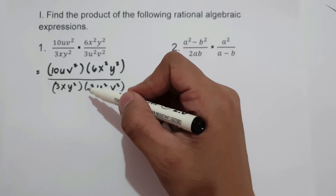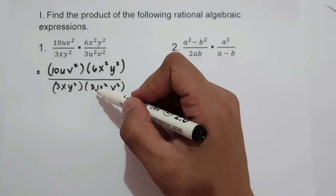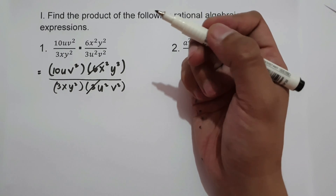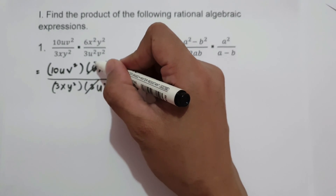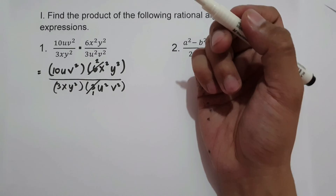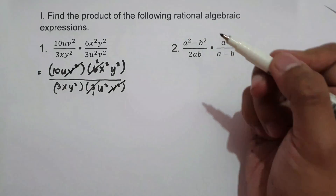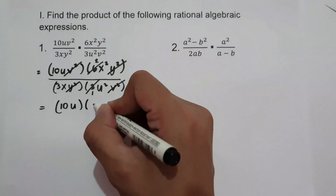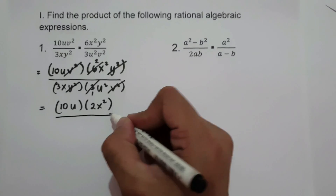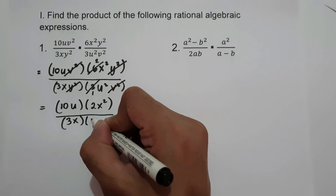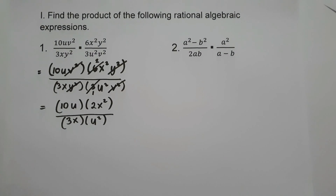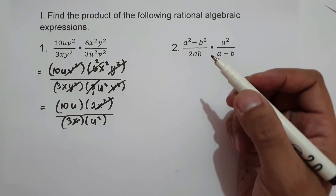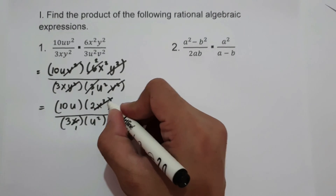Before we multiply, we are going to find coefficients or variables that can be written in simplest form. 6 and 3 can be simplified because their greatest common factor is 3, so 6 becomes 2 and 3 becomes 1. We can cancel v² and v², and also cancel y². So we have 10u times 2x² over 3x times u². We can also cancel x² and x since their greatest common factor is x, so x becomes 1 and x² becomes x.